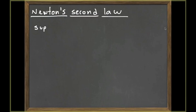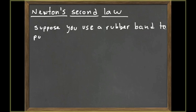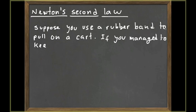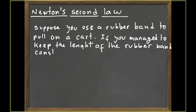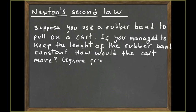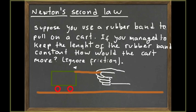Let's talk about Newton's second law. Suppose that we use a rubber band to pull on a cart and we pull in such a way that the length of the rubber band is constant. If we manage to keep the length of that rubber band constant, we can ask the question: how would that cart move? Would it move with constant velocity, constant acceleration? Would its velocity change as the third power of time, second power of time?